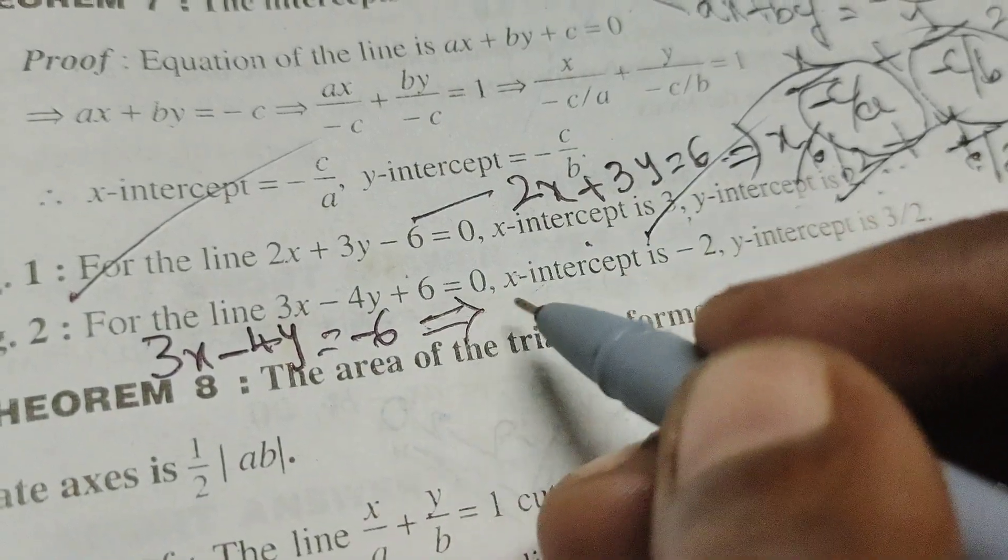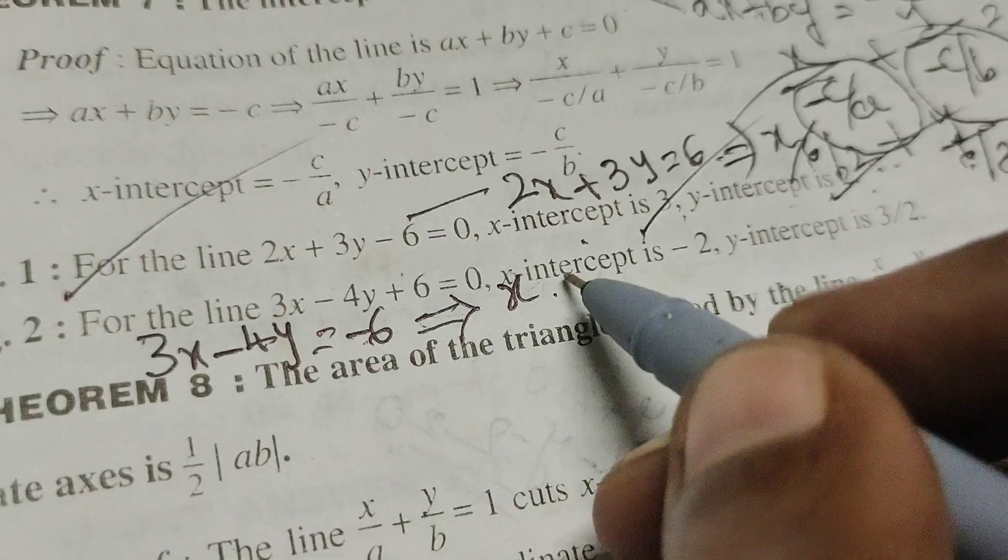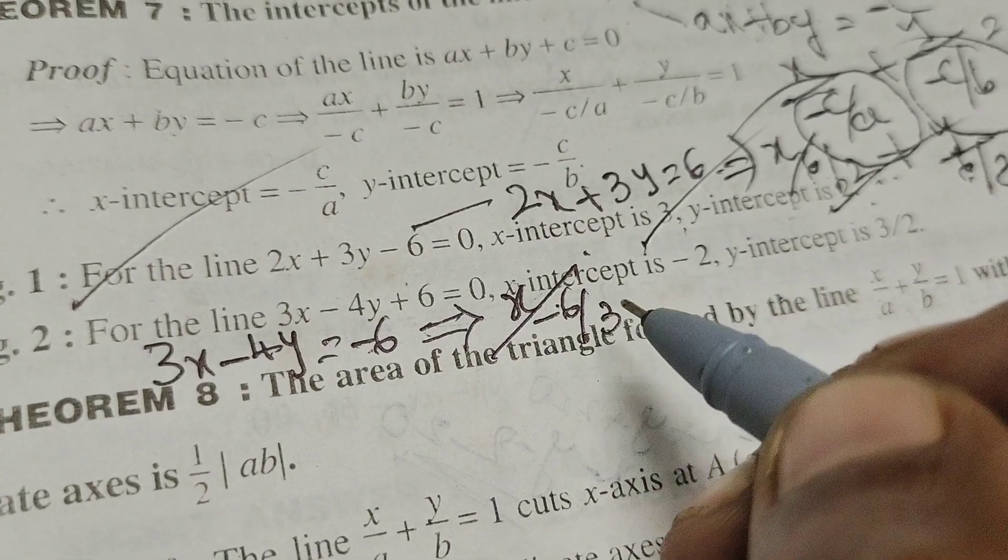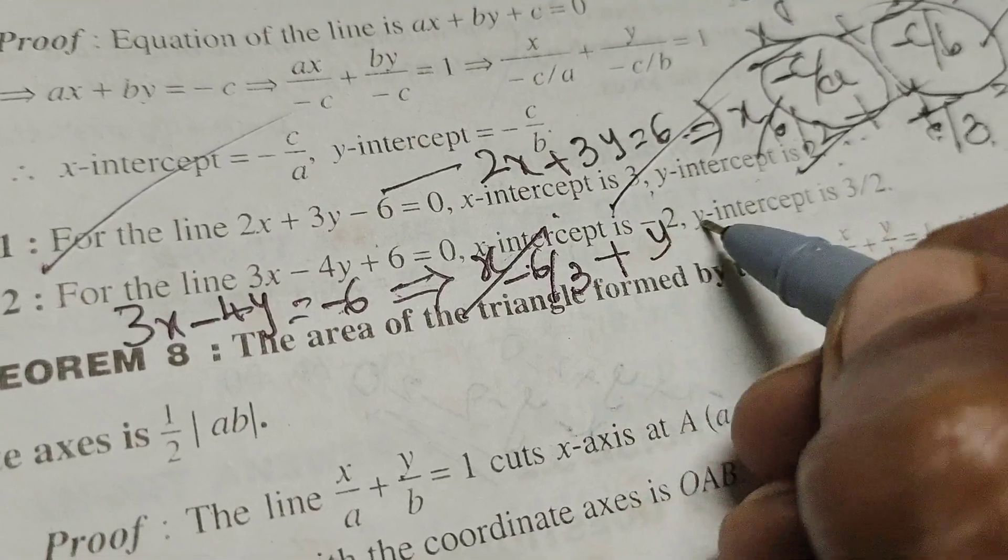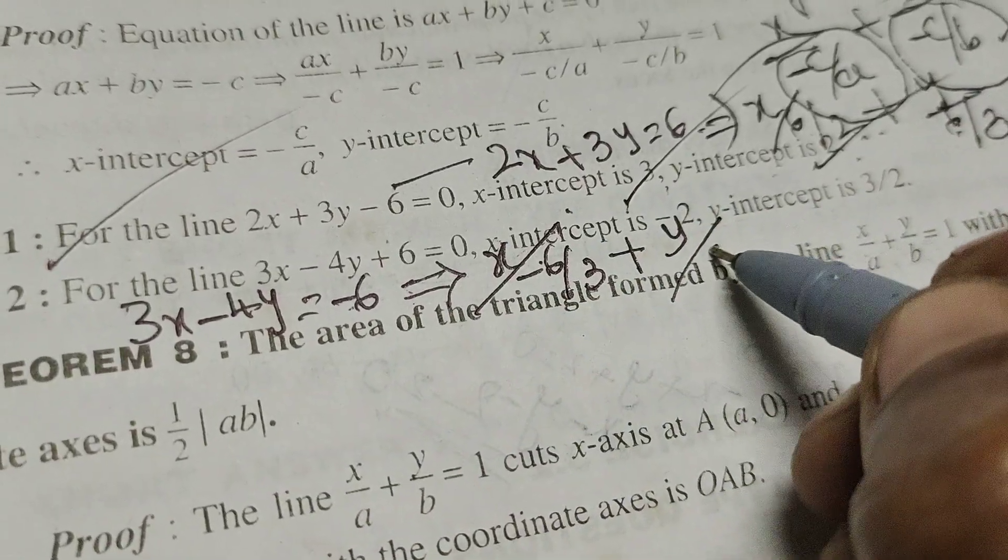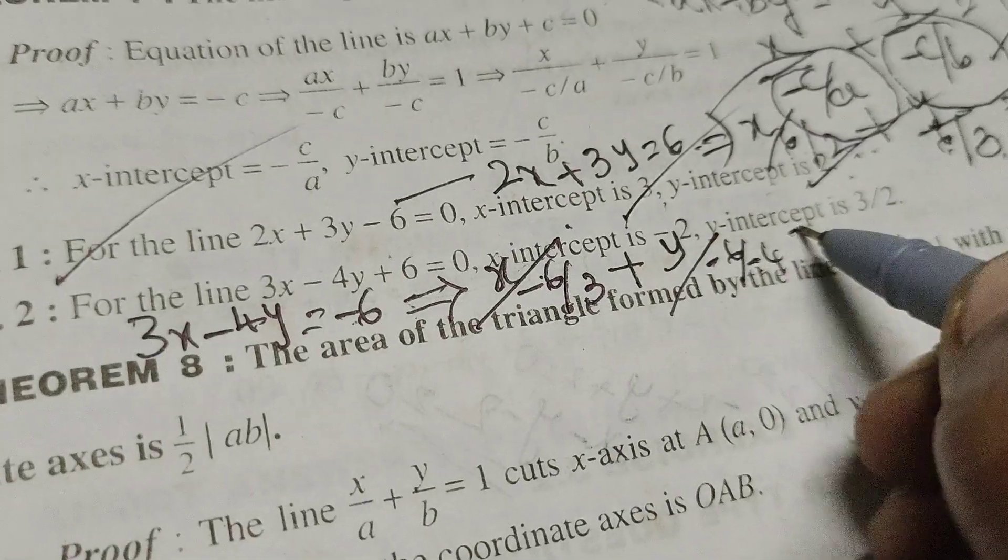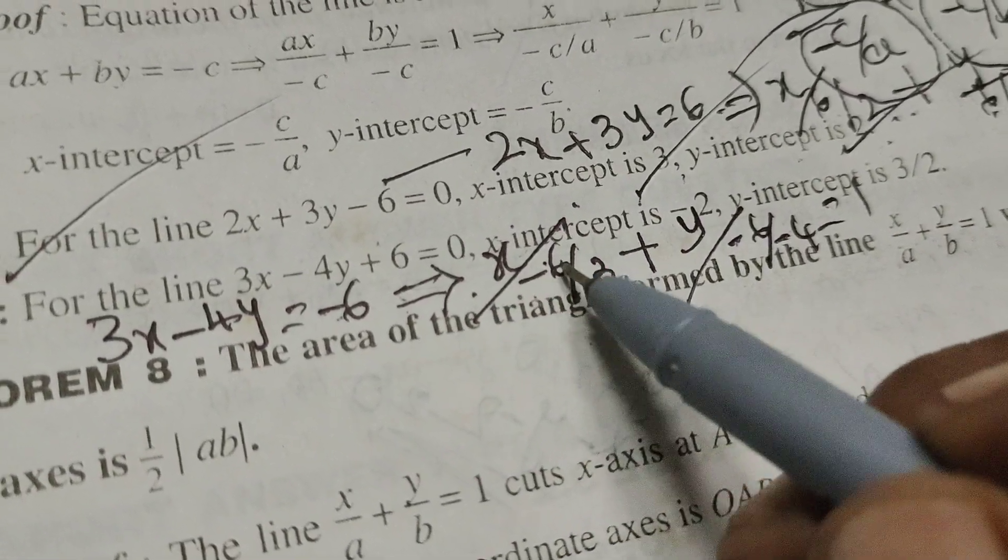That implies x over minus 6 over 3 plus y over minus 6 over minus 4 equals 1. Here x-intercept means minus 6 by 3.